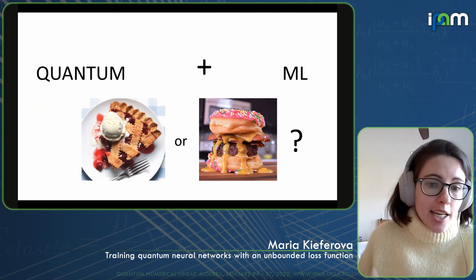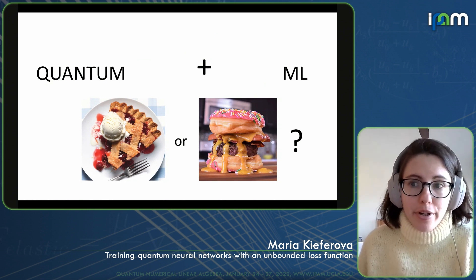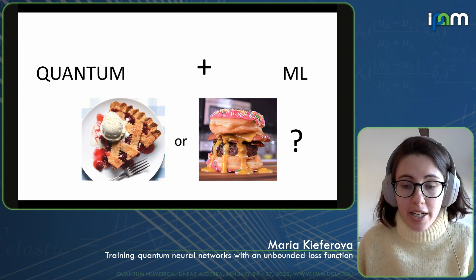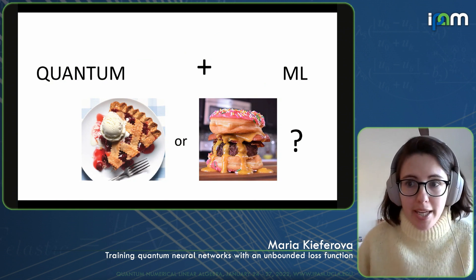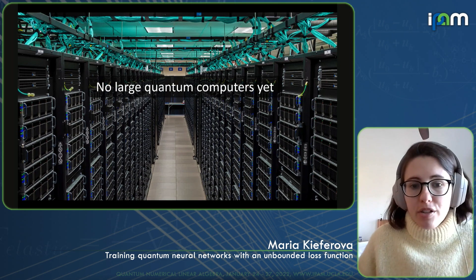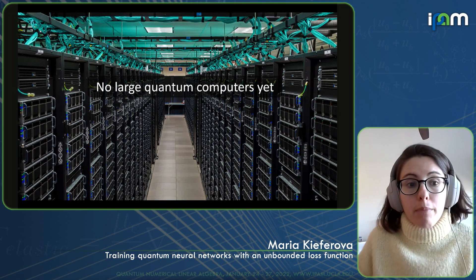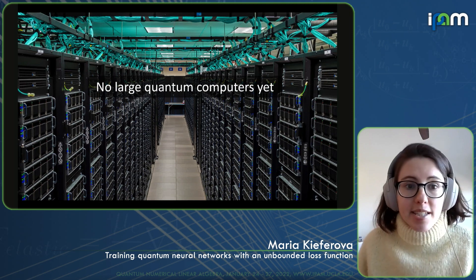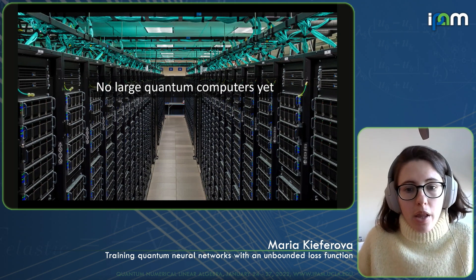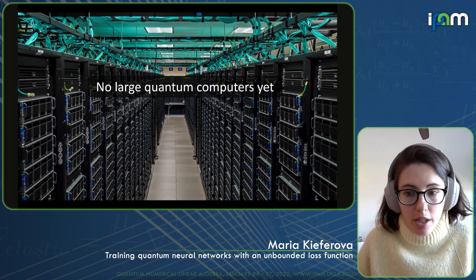But the question is: if we put them together, would they work together like cherry pie and vanilla ice cream, or do we end up with some crazy monster where the individual parts really just fight each other? To be completely fair, so far we don't really know. We have some successes, but the really big problem is that we don't have large quantum computers yet, and we cannot run a large quantum machine learning model on a big dataset and compare it with traditional machine learning.